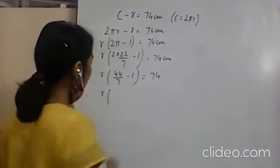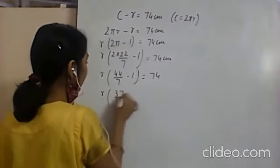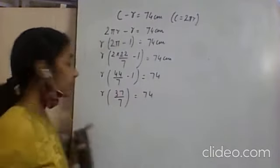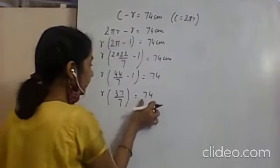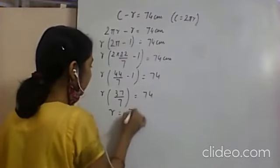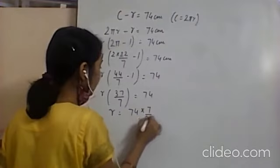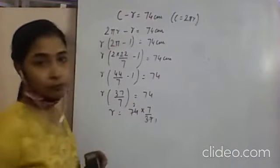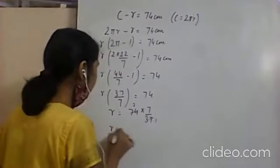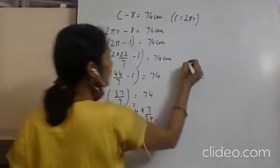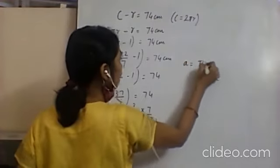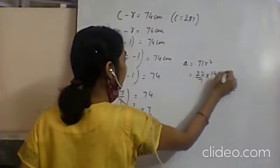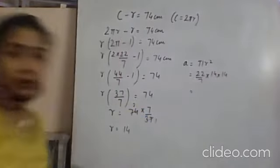So 37/7 equals 74, meaning r equals 74 into 7 upon 37. Since 37 twos are 74, the radius equals 14. Now knowing the radius, area equals πr²: 22/7 into 14 into 14.